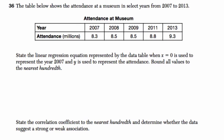Alright, so the table below shows the attendance at a museum, and we see that each year the attendance is generally going up. They want us to state the linear regression, so we need to find the linear equation that best represents this data. When x equals 0 is used to represent the year 2007.